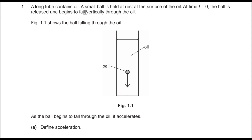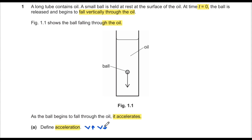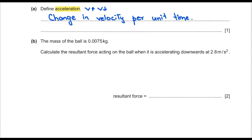The first question says a long tube contains oil. A small ball is held at rest at the surface of the oil. At time t equals zero, the ball is released and begins to fall vertically through the oil. Figure 1.1 shows the ball falling through the oil — we have a tube with oil and a ball going vertically down. Part A says to define acceleration: acceleration is increase or decrease in velocity, calculated as change in velocity per unit time.